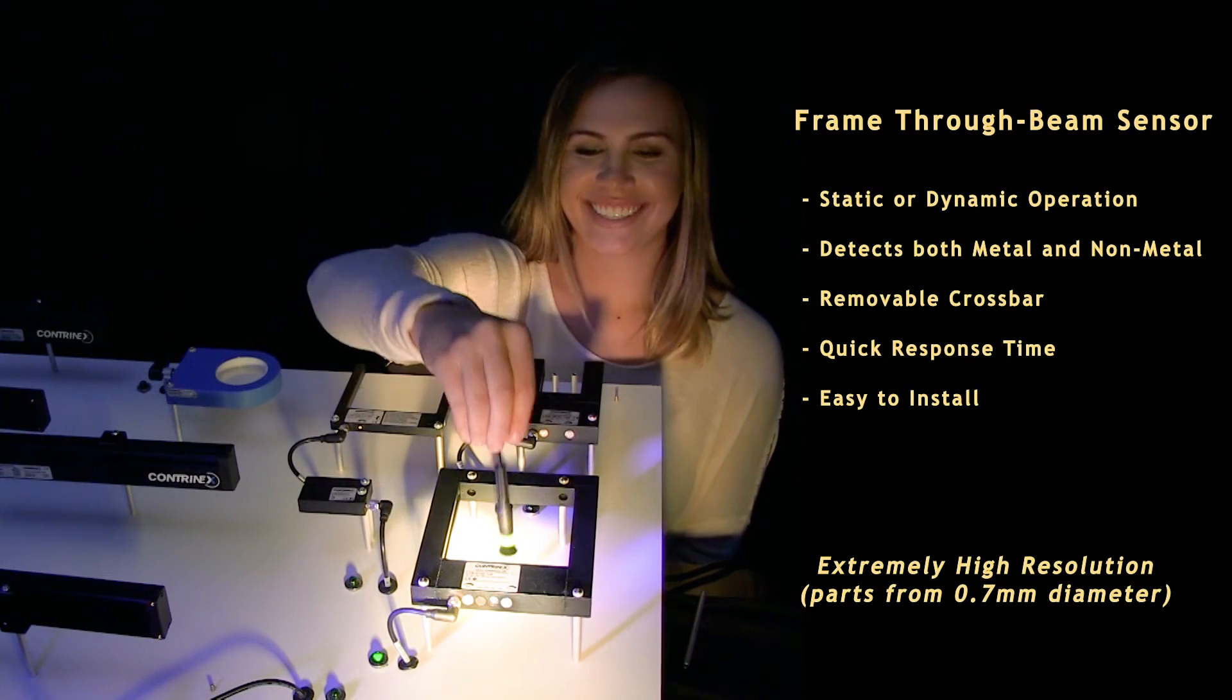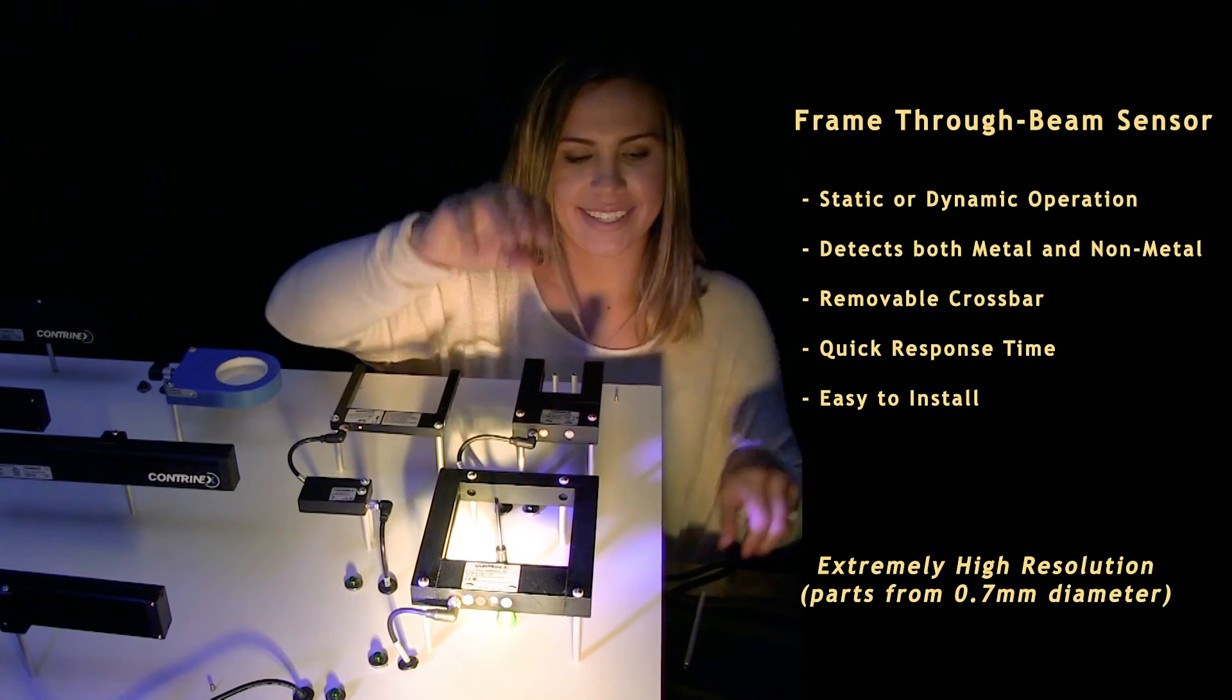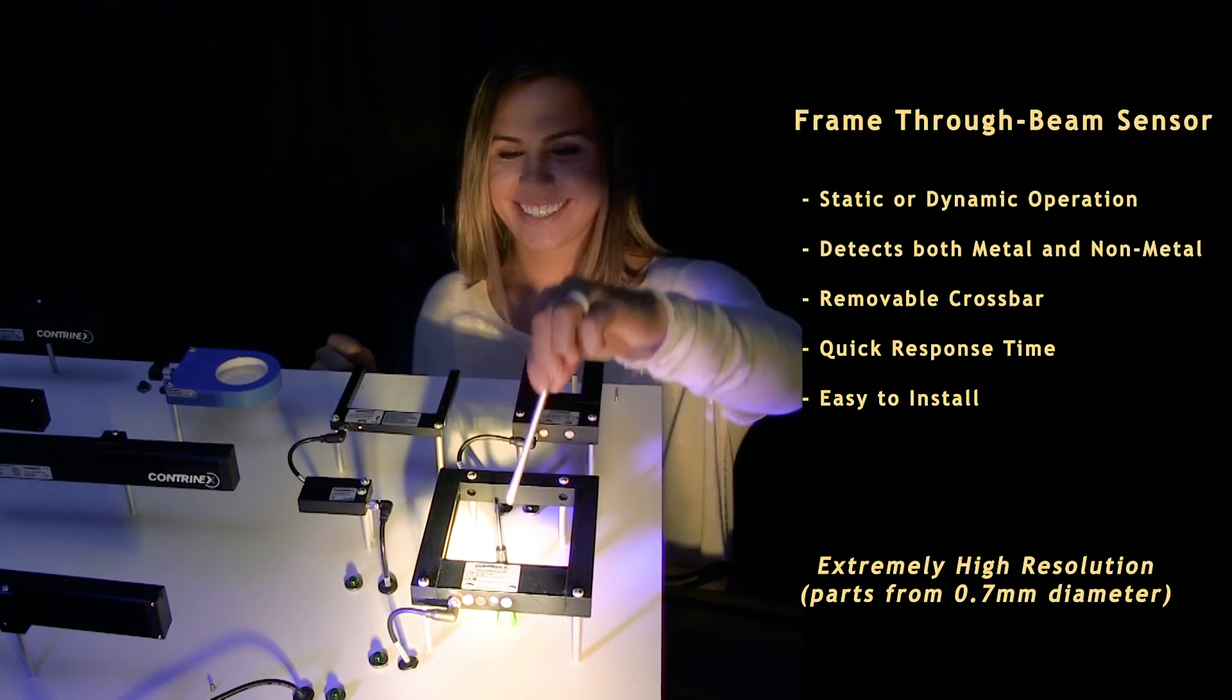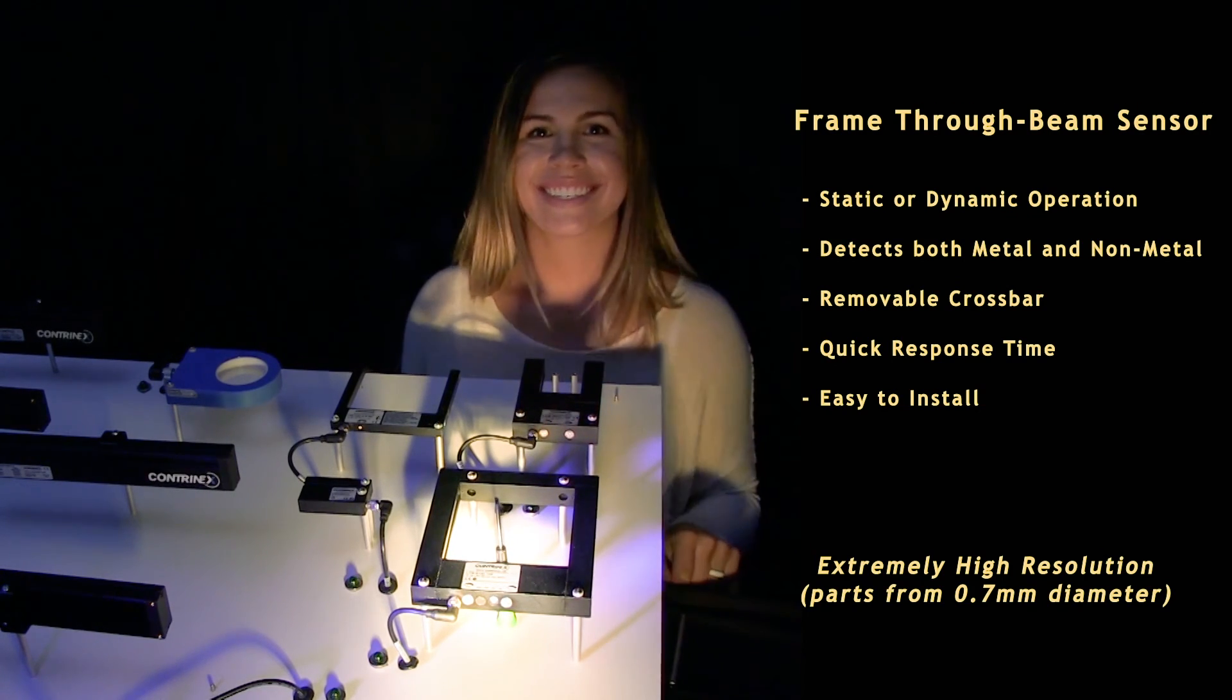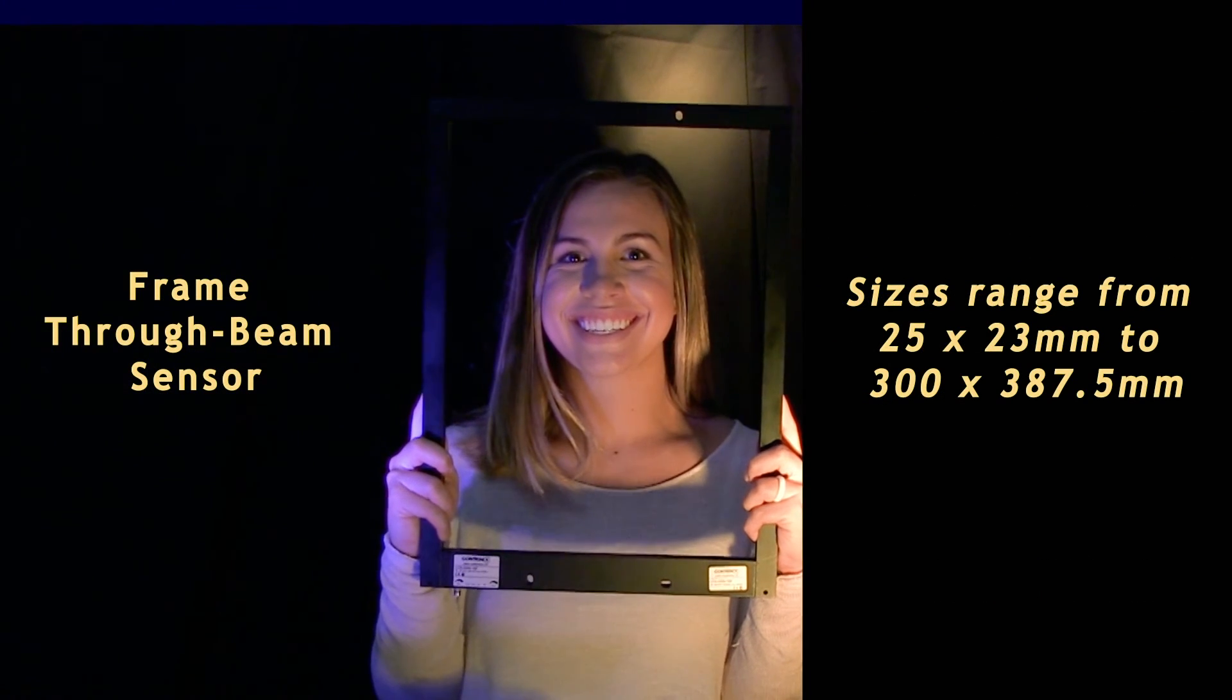The frame through beam sensors are suitable for a large range of applications. With a considerable number of emitters and receivers located on opposite sides of the frame, an object's whole passage is covered with a light curtain.